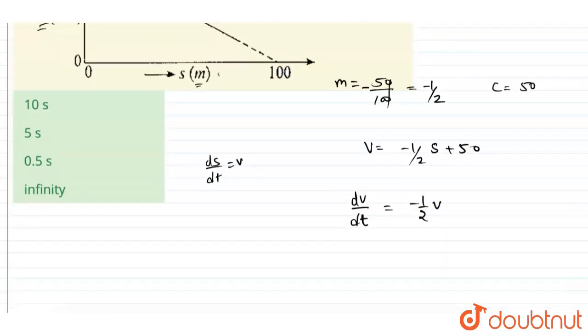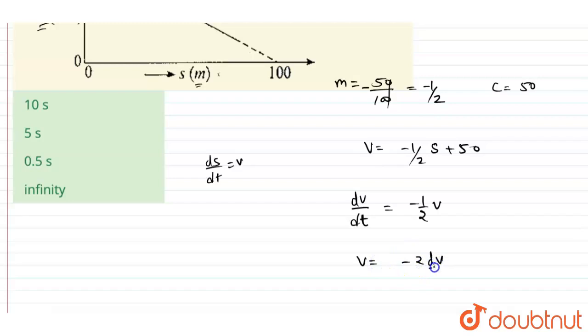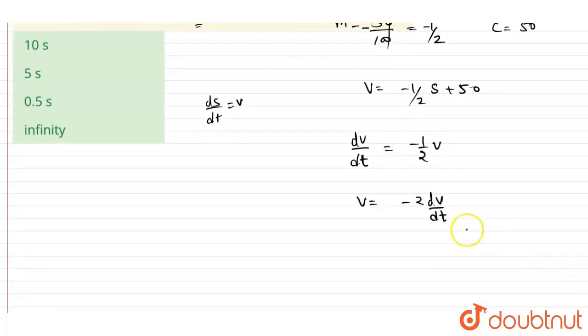So here from this we can write that v will be minus 2 dv/dt. You can write it so. Or else we can write that dv by v...